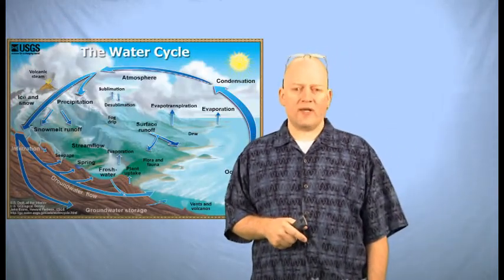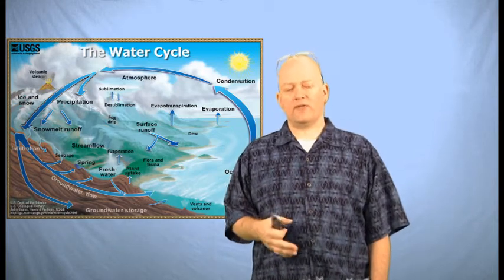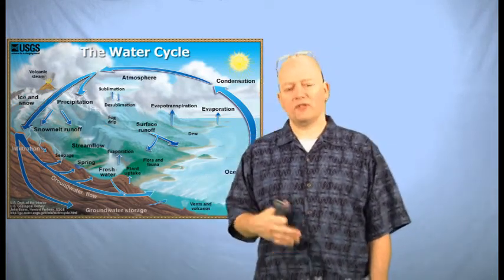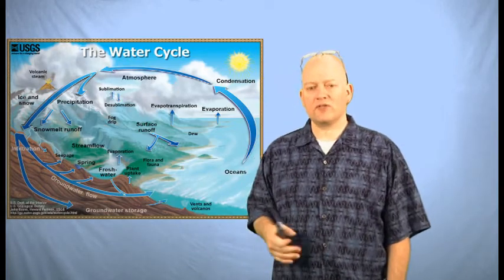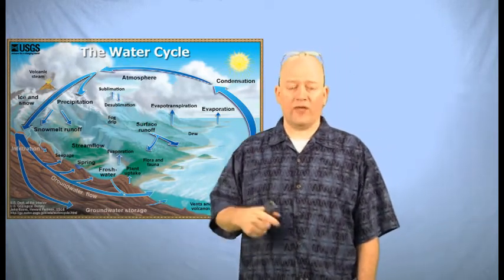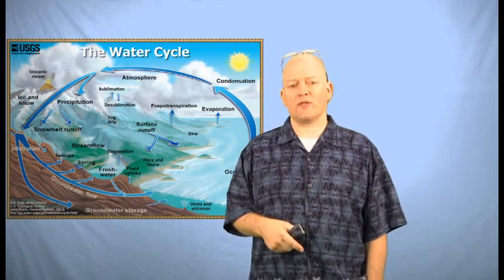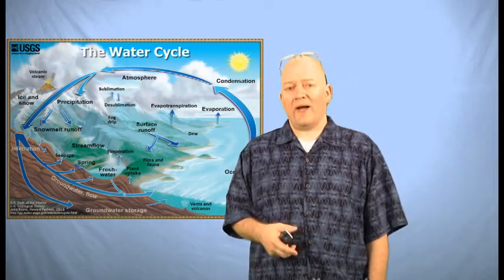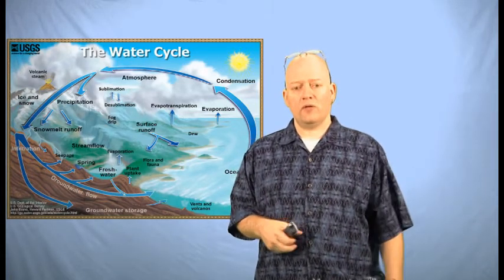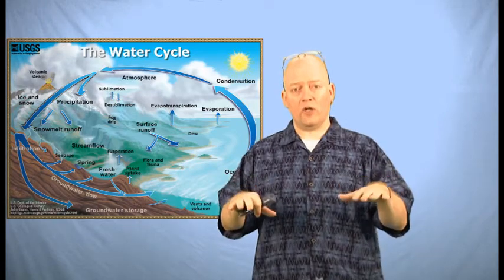Remember the water cycle from sixth grade? The idea that rain and snow fall on the land — the rain flows into streams, rivers, and snow melts, flows into lakes and oceans, where it evaporates and then returns back as rain over the land again. During an ice age, moisture falls as snow onto the ground where it piles up. As water continues to evaporate from the oceans, that drops as more snow, and the oceans slowly lower in level.